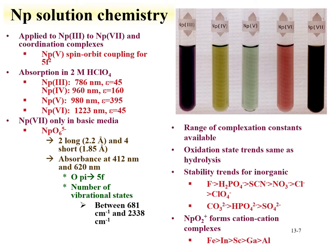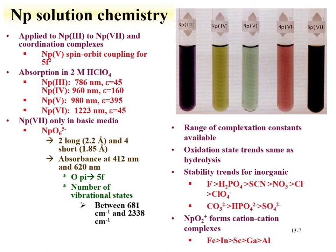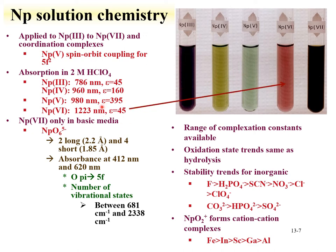The complex solution chemistry of neptunium can be explored for the range of oxidation states. Detailed modeling has been explored with neptunium-5 looking at spin-orbit coupling of the two 5f electrons. Since the neptunium species are colored, UV-visible spectroscopy can be a useful tool in evaluating speciation. In 2 molar perchloric acid, neptunium-3 has an absorbance around 780 nanometers with an extinction coefficient of 45. Tetravalent neptunium absorbs at around 960 nm with a larger extinction coefficient. The prominent oxidation state neptunium-5 has a very large molar absorptivity close to 400 and is in the near-IR region close to 1000 nm. Neptunium-6 is at 1200 nanometers with a molar extinction coefficient of 45.